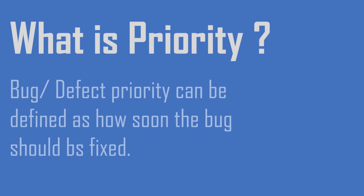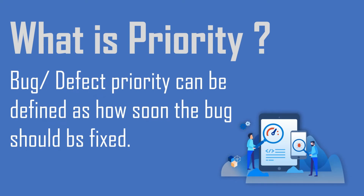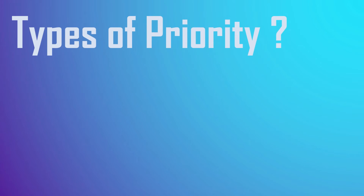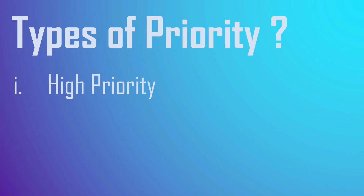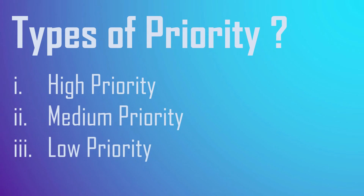Switching to priority — what is defect priority? Priority can be defined as how soon a defect should be fixed. It gives the order in which defects are to be resolved. Developers decide which defect to proceed with on the basis of priority. The types of priority are: high priority, medium priority, and low priority.